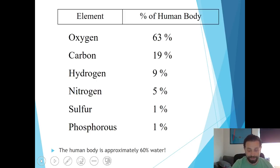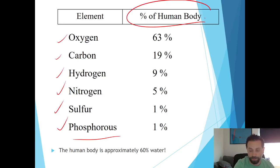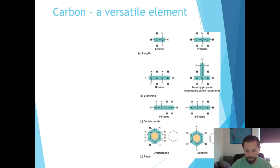This first slide is basically talking about the different elements that we have in our body and the percentage of them that we have. You do not have to memorize these numbers, so please don't feel like you have to memorize 63% oxygen or whatnot, but basically it's just kind of a fun fact telling you approximately what percentage of each element we have in our body. The human body is approximately 60% water.